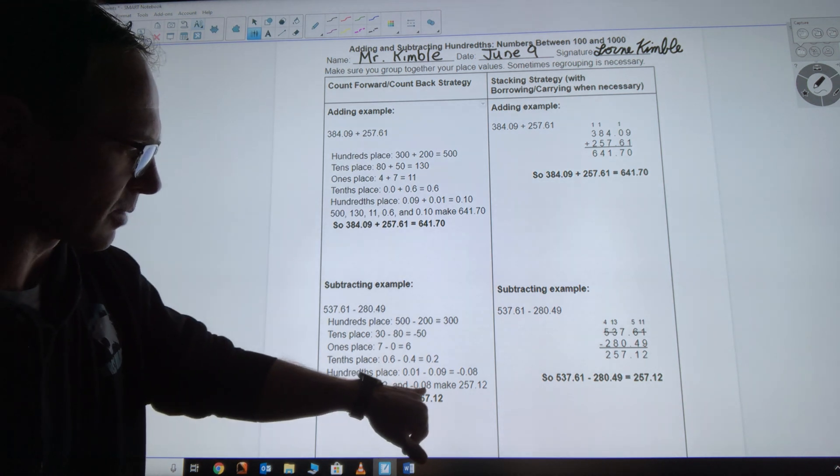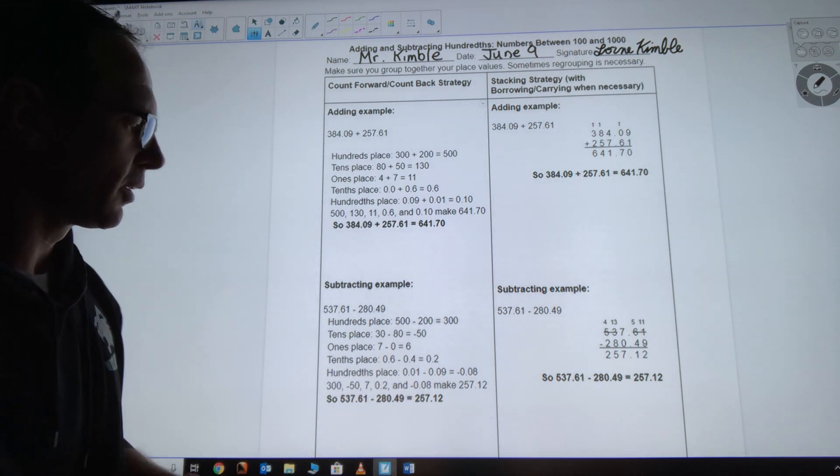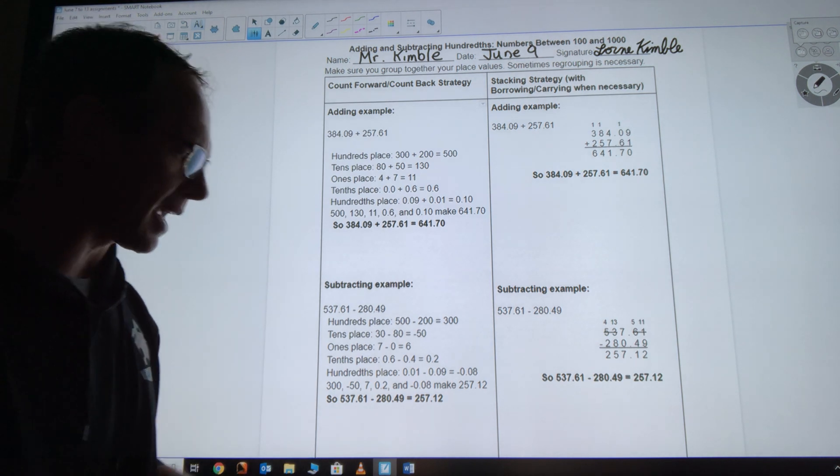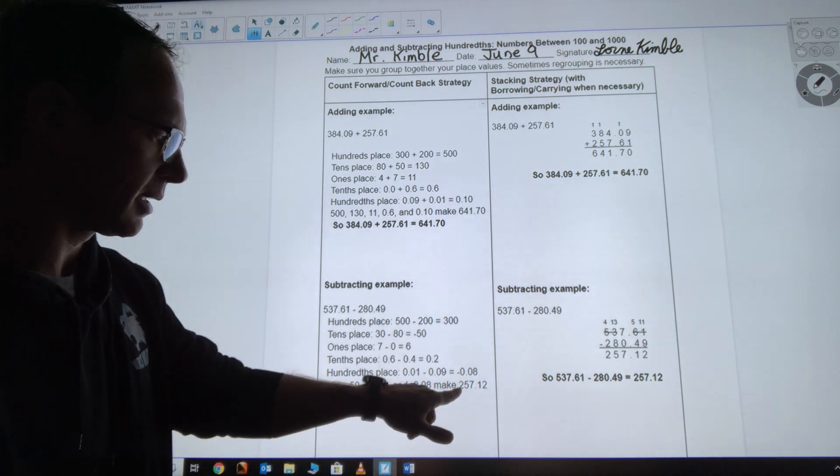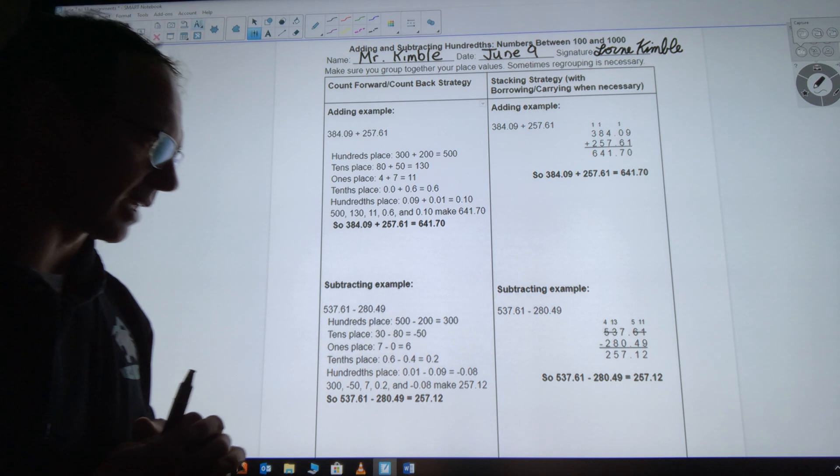And then I have a negative 0.08. So from 357 decimal 2, I need to take off 0.08 to give me 257 decimal 1, 2.